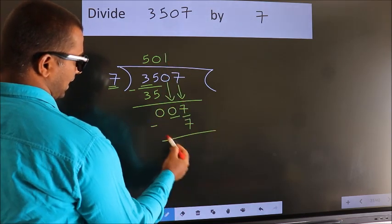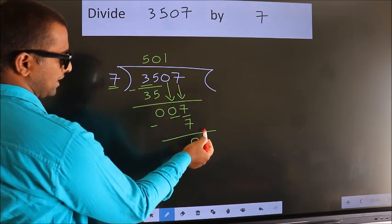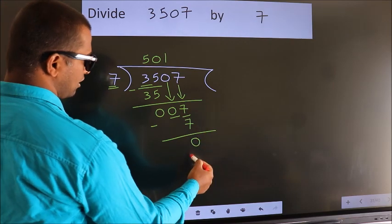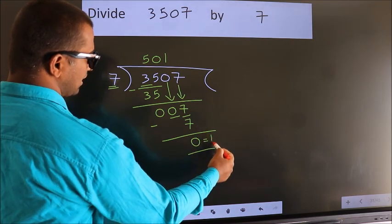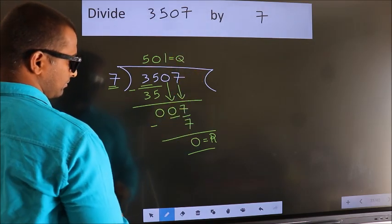Now we subtract. We get 0. No more numbers to bring it down. So we stop here. This is our remainder. This is our quotient. See you guys again. Until next time.